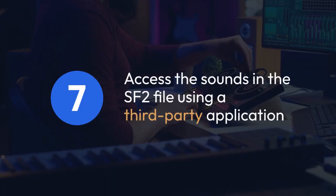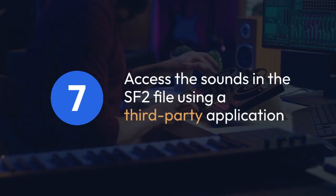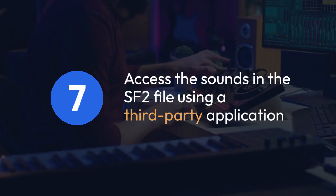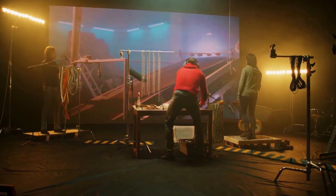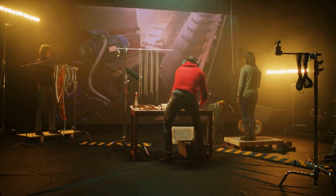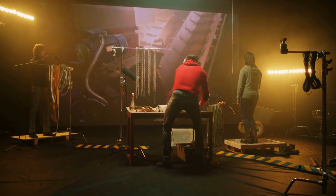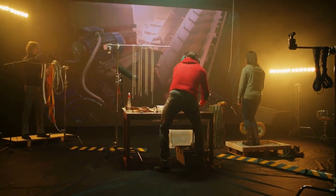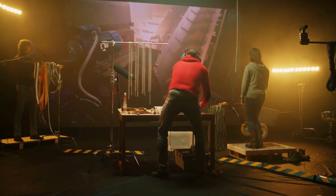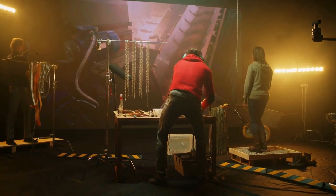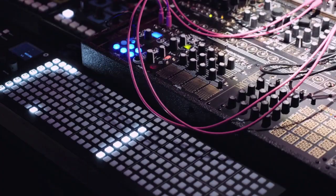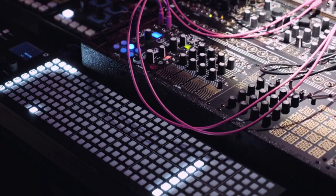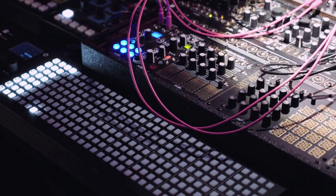To access the sounds in the SF2 file, you'll likely need a third-party application. There are apps available that can convert the SF2 sound bank into individual WAV files — a format FL Studio Mobile supports — or other compatible formats like AIFF.